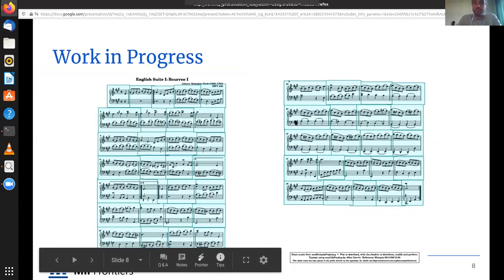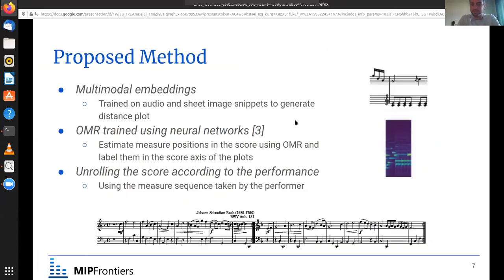On the right side you can see an example of two corresponding snippets of the MSMD, which is the dataset used for training the model. With the embeddings of a given performance and its respective score, we can generate a distance plot, also known as distance or cost matrix. Then the measure positions in the score will be estimated using an OMR system. And the benefit of using these types of embeddings is that since they are not on the frame level, we suspect that they might work better with approximate measure and block detections as opposed to chroma-based features. And the last task will be using the distance matrix and the measure positions to unroll the score according to the performance so we can have some sort of unrolled performed score.